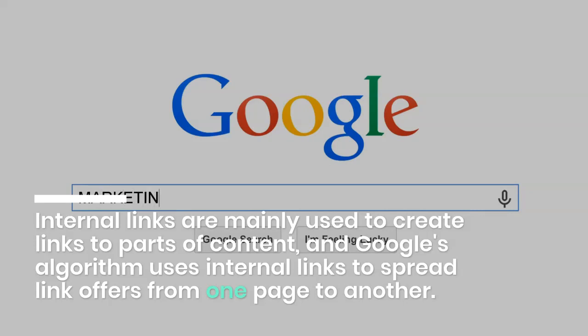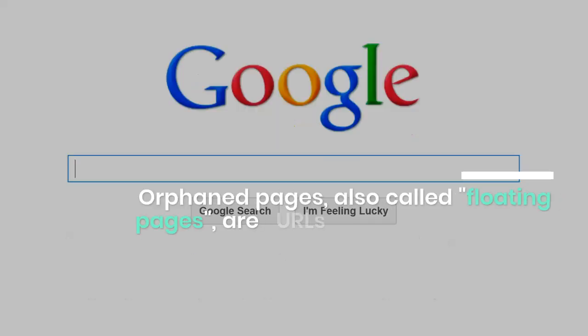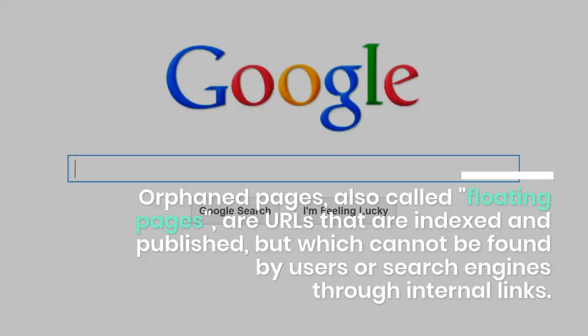Orphan pages, also called floating pages, are URLs that are indexed and published, but which cannot be found by users or search engines through internal links.